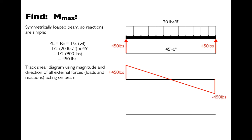The shear diagram goes up 450 pounds on the left, slopes down at 20 pounds per linear foot driven by the distributed load, reaches minus 450 pounds at the right, and the right reaction pushes it back up to zero. We need zero shear and zero moment at the ends of each beam. This gives us the very common, distinctive bow tie shape for the shear diagram.